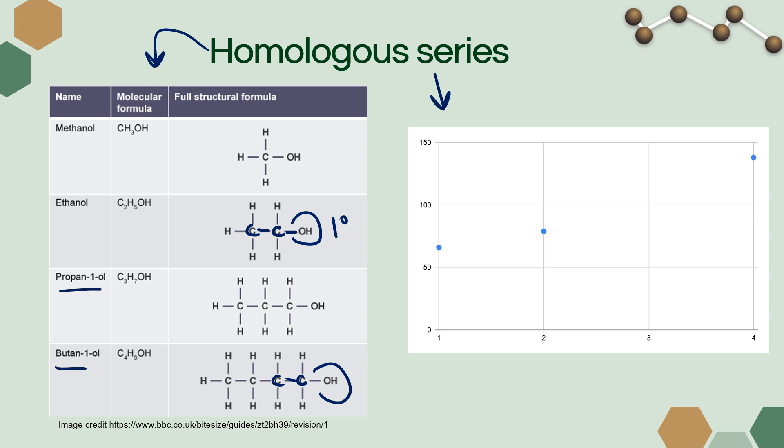I have graphed the boiling points of methanol, ethanol, and butan-1-ol. I skipped propanol. Here are the number of carbons in each of these primary alcohols, and our y-axis is boiling point in degrees Celsius. We can predict the boiling point of propan-1-ol by looking at the trend.